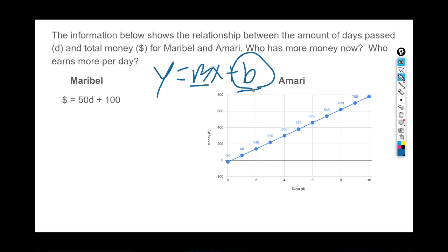The 100 is the constant. If there's zero days past, that's what the y-intercept means: 50 times 0 plus 100. That tells us how much money Maribel has at zero days—she has $100. The hundred is in the place of the y-intercept in y equals mx plus b. So Maribel has $100 right now.